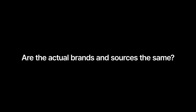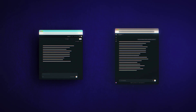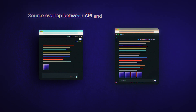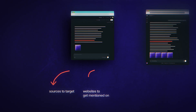Here's the question that really matters: are the actual brands and sources the same? Because if API data and scraped data are just formatted differently but pointing to the same brands and sources, then maybe it's not such a big deal, right? Wrong. Brand overlap between API and scraped results was only 24%. That means three out of four brands that appeared in real ChatGPT answers didn't show up in the API results at all. And sources? Even worse — just 4% overlap. So if you're using API data to figure out which sources to target, you're optimizing for sources that don't even appear in the answers that real users see.